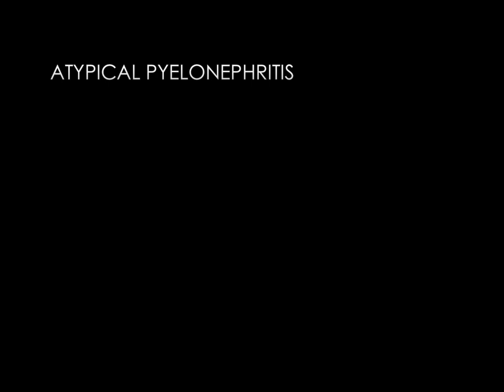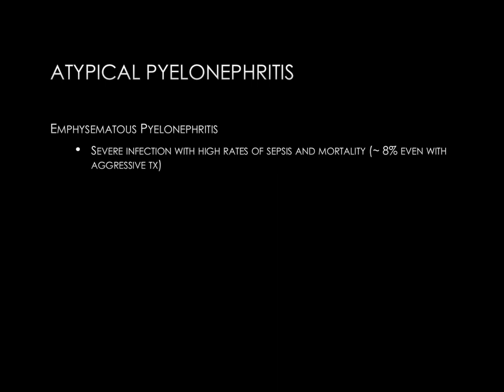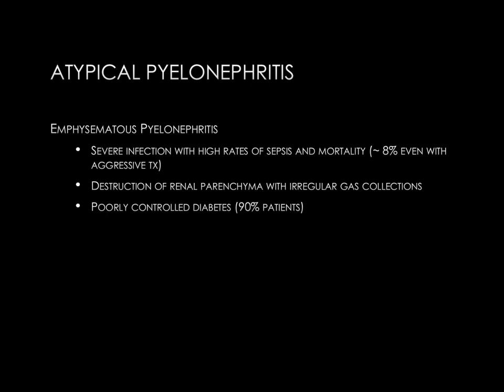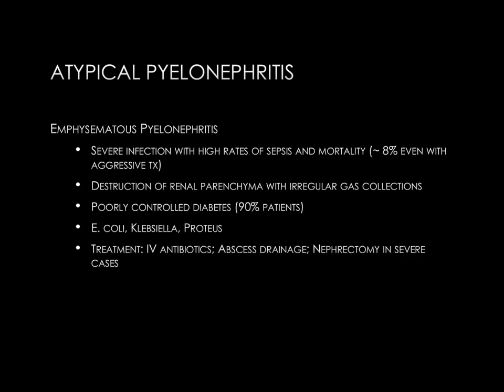We'll discuss several atypical forms of pyelonephritis which can have classic imaging features. The first is emphysematous pyelonephritis, a gas-forming infection of the renal parenchyma. This is a severe infection with high rates of sepsis and mortality — mortality is up to 8% even with aggressive treatment. There is destruction of the renal parenchyma and irregular gas collections which extend into the renal parenchyma and cortex. Many of these patients have poorly controlled diabetes. The infection is typically caused by E. coli, Klebsiella, or Proteus. Treatment is with IV antibiotics and abscess drainage; however, this infection not infrequently requires nephrectomy.